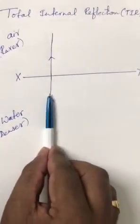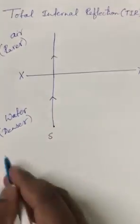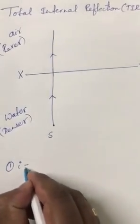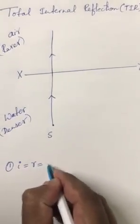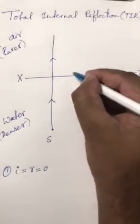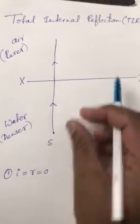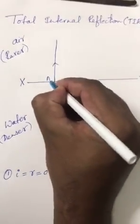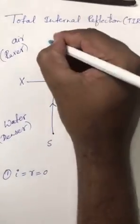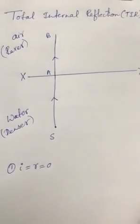When the light ray travels via the normal, it will go undeviated. So the angle of incidence will be equal to the angle of refraction — that will be equal to 0 in the first case. Here S is the source, SB is the incident light ray, and AB is the refracted light ray.